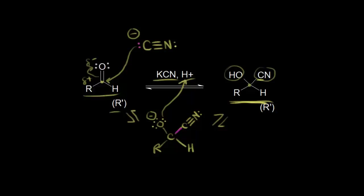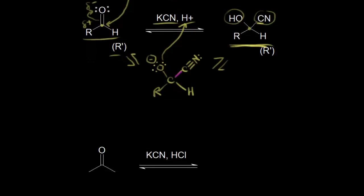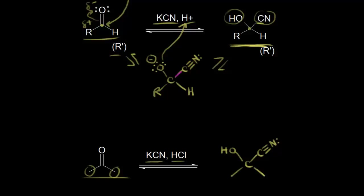Let's look at an example of cyanohydrin formation. If we start with acetone (a ketone) and add potassium cyanide and hydrochloric acid, we form our cyanohydrin: a carbon triple bonded to nitrogen and an OH group, with the two methyl groups from the ketone. Once you form a cyanohydrin, you can convert it into other functional groups, which is another reason it's useful for synthesis.